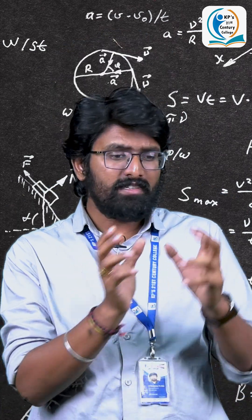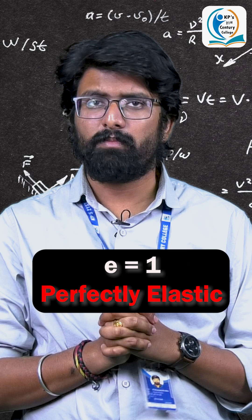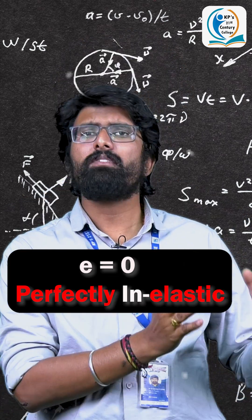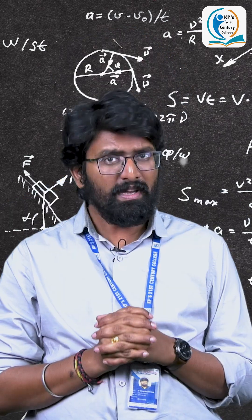As I told you, coefficient of restitution is a dimensionless quantity. If e is exactly equal to 1, then the body is said to be perfectly elastic. If e is equal to 0, then the body is said to be perfectly inelastic, which means there is no bouncing back effect. Thank you.